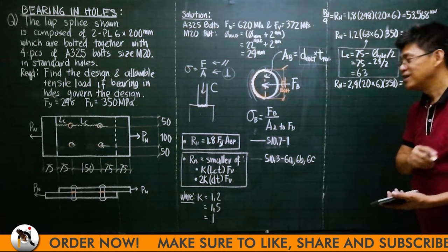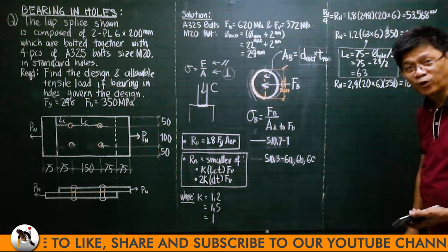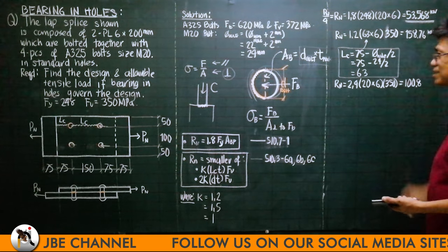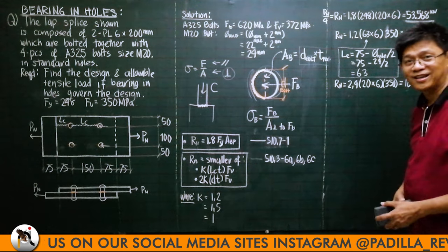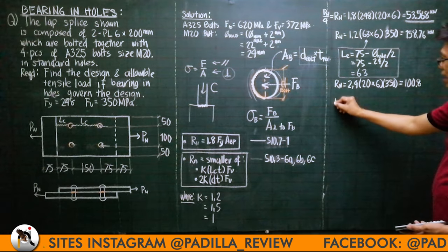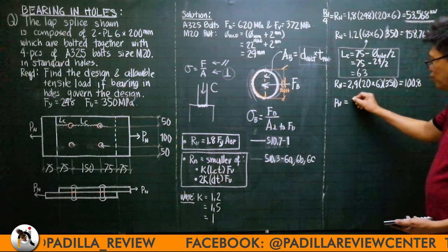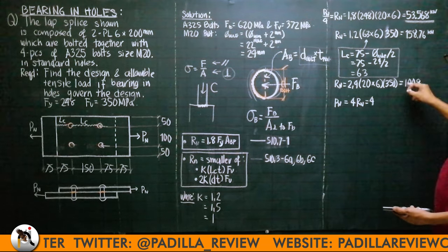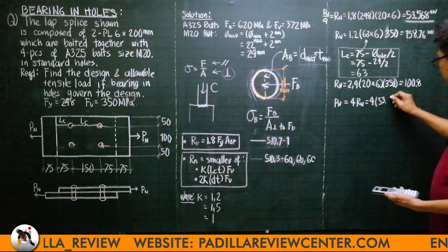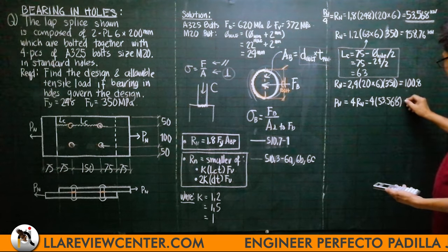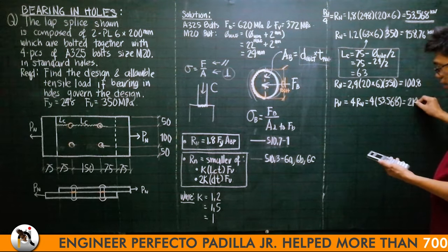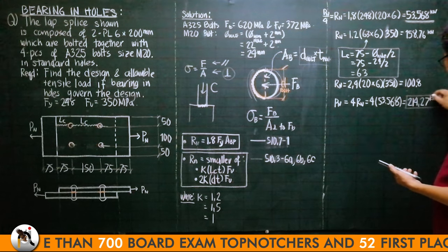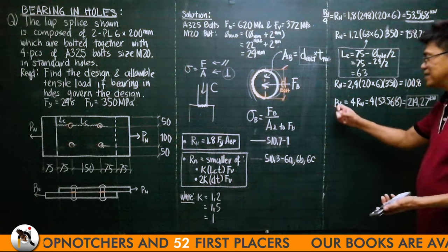All of these are force per bolt, so they must be multiplied by 4 to get total Pn. The smallest among the three governs — which turns out to be 53.568 kN. Therefore Pn = 4 × 53.568 = 214.27 kN. This Pn is the total force.